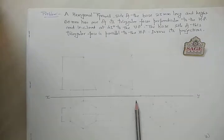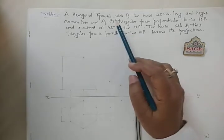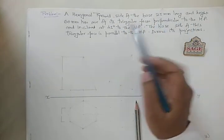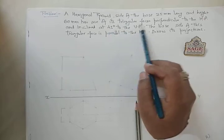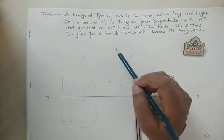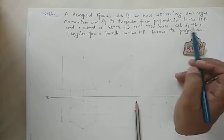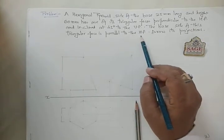Hello students. Here I am with another problem on projection of solids. This time the problem is: a hexagonal pyramid with side of base 25 mm long and height 60 mm has one of its triangular faces perpendicular to the HP and inclined at 45 degrees to the VP. The base side of this triangular face is parallel to the HP.